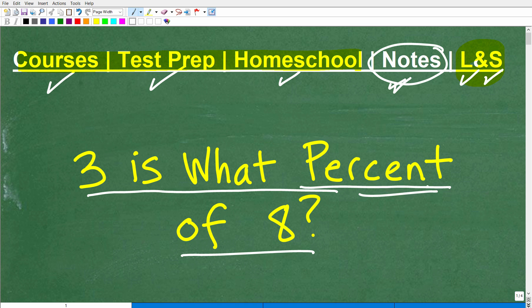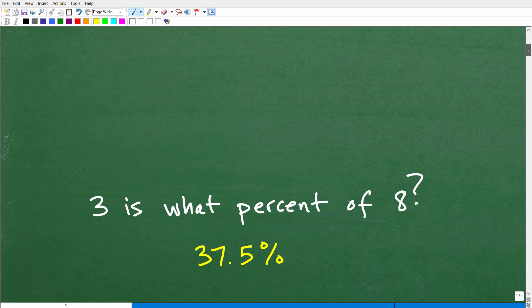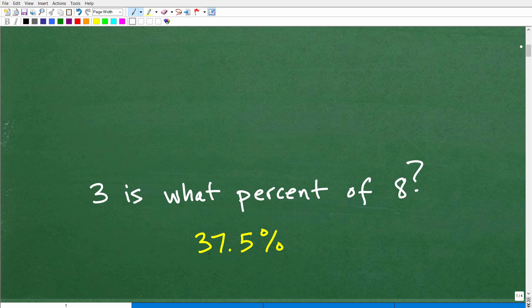Okay, let's learn about percent. Before we get into the solution, let me give you the answer. So 3 is what percent of 8? The answer is 37.5%. I would have been remiss if I just said 37.5 without the percentage symbol.